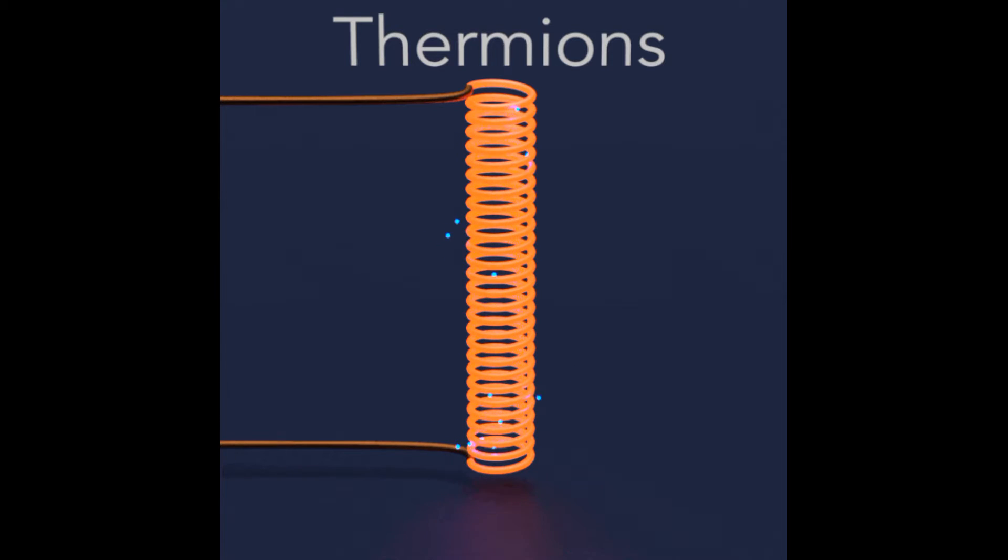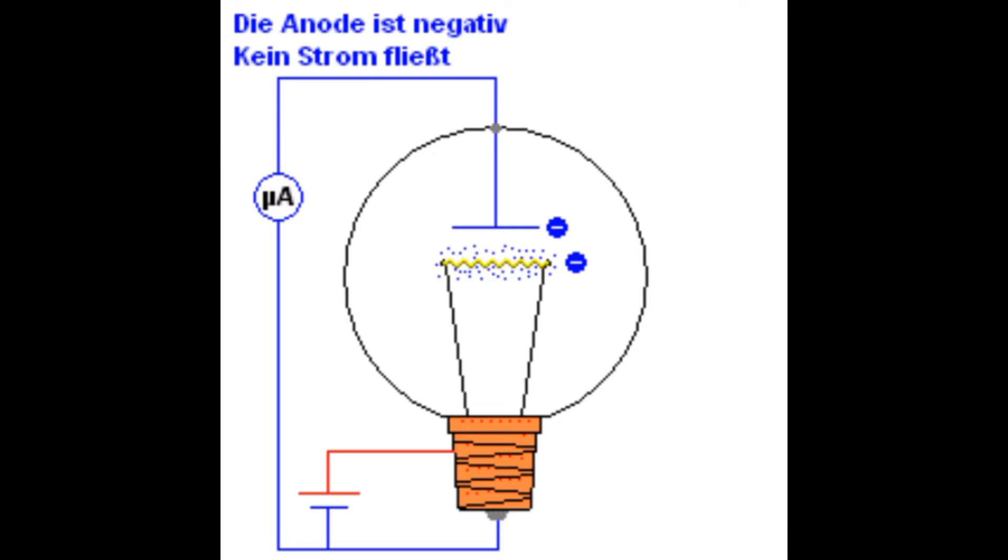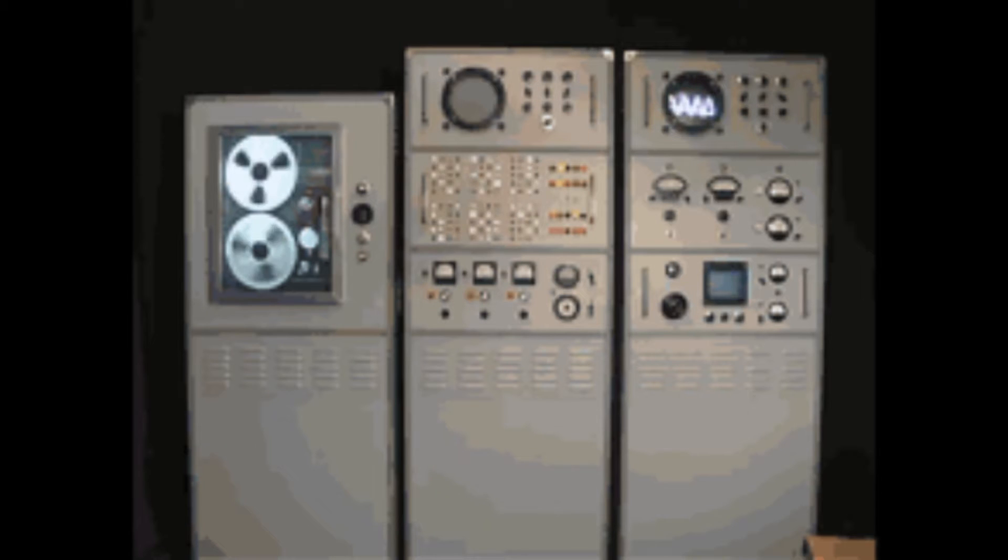In the glow of Edison's laboratory, electrons were observed dancing within a vacuum, liberated from a heated filament. This phenomenon, later termed the Edison Effect, laid the groundwork for what would become the mesmerizing world of vacuum tubes.